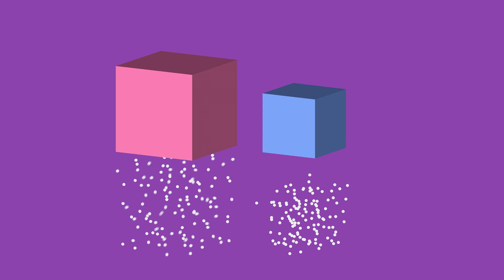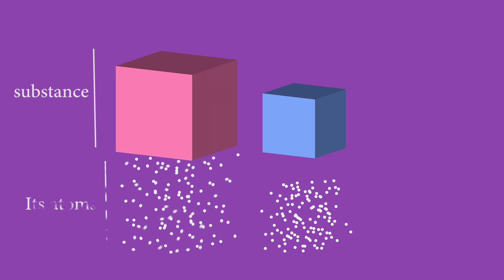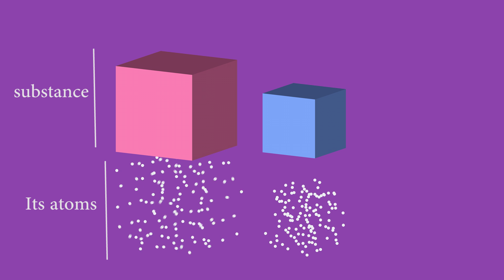Temperature is a measure of how fast atoms and molecules move within a substance. If the average molecules are moving faster, it has a higher temperature.